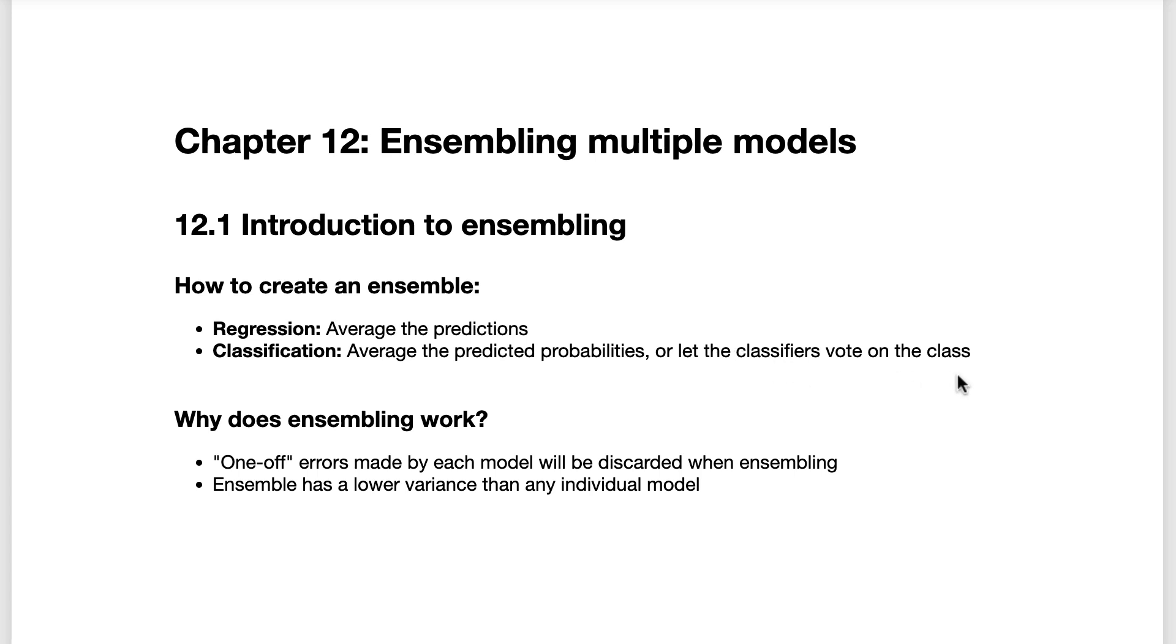The idea behind Ensembling is that if you have a collection of individually imperfect models, the one-off errors made by each model are probably not going to be made by the rest of the models. Thus, the errors will be discarded, or at least reduced, when ensembling the models.